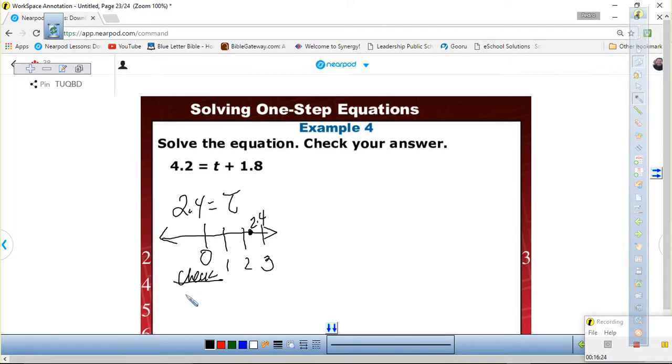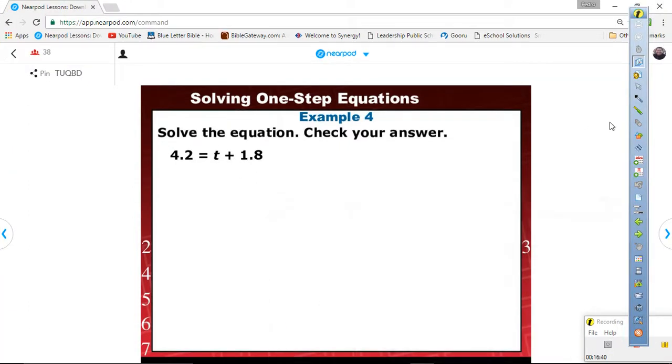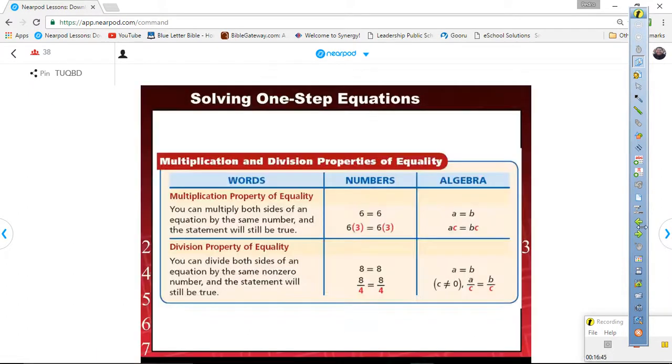And then you checked, 4.2 equals t plus 1.8. 4.2 equals 2.4 plus 1.8. And it looks like it's 4.2 equals 4.2. So we got these, right? So now we're moving on to multiplication and division. Copy the two properties, multiplication property of equality and division property of equality. You don't have to write the examples. Just write in your own words what each property means.